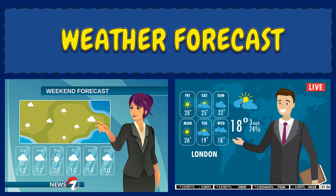A weather forecast is simply a scientific estimate of future weather conditions. Weather condition is the state of the atmosphere at a given time expressed in terms of the most significant weather variables. The significant weather variables being forecast differ from place to place. In the Philippines, the weather parameters of interest to users of the forecast are cloudiness, rainfall, and wind. In forecasting the weather, a meteorologist must know something about the existing weather condition over a large area before he can make a reliable forecast.